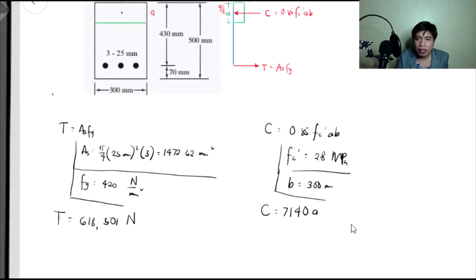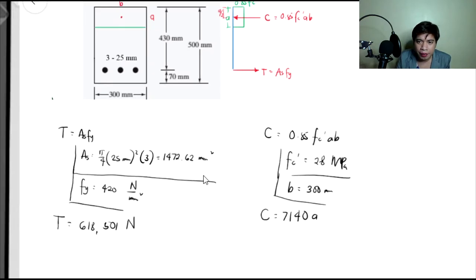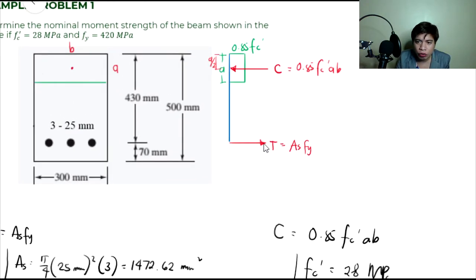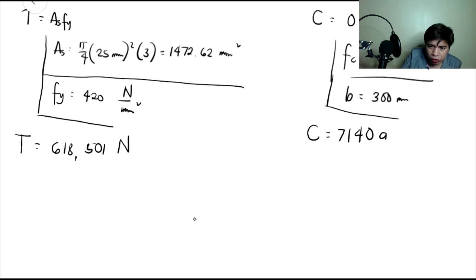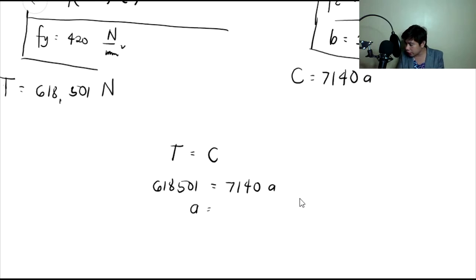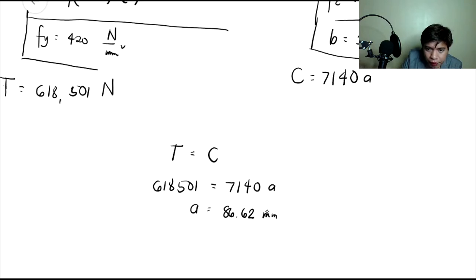Since dalawa lamang yung ating forces dito — yung tension at saka compression — para maging equilibrium ito, dapat si compression is equals to tension. So equate natin yung dalawa: 618,501 is equals to 7140A. So dito makocompute natin si A, and that will be A equals 86.62 millimeters.